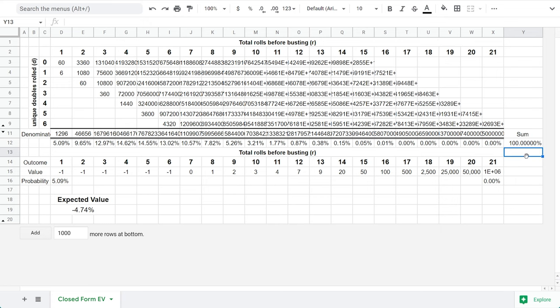The first step in verifying probabilities is adding them all up and seeing if that equals 100%. This does, which means it is a valid probability distribution. This might not be the correct distribution though, so the way I verified it was to write some simulation code to try playing the game lots of times.